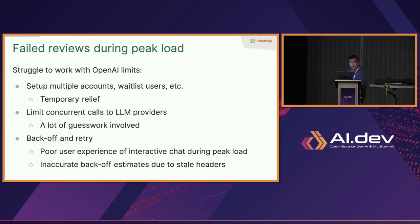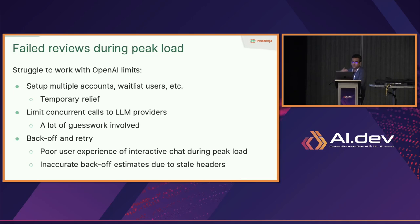A lot of companies were forced to put waitlists on their product despite demand. Another thing CodeRabbit tried was limiting concurrent calls to OpenAI — on each container they'd put a concurrency limit, and that helped to some extent but a lot of guesswork was involved: is 10 a good number? Is 20? Given the distributed nature of their system, there was no coordination. They also tried back-off and retry — each time you hit a rate limit you get a retry-after header. But given 30–40 second delays, those headers are very stale and inaccurate.